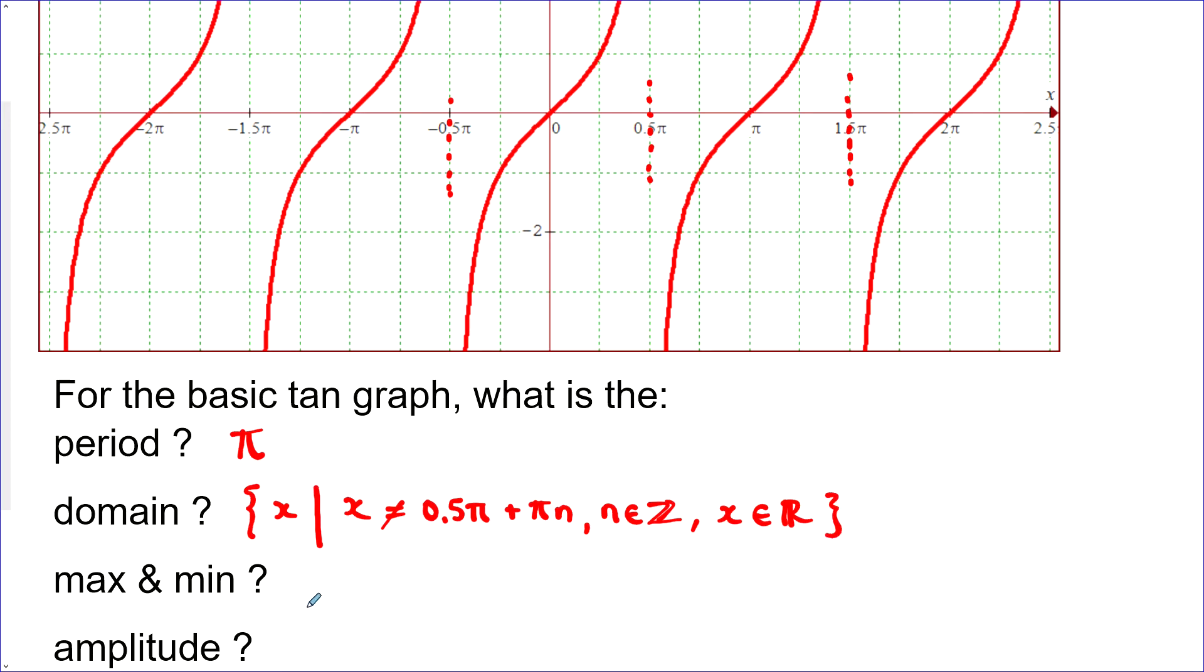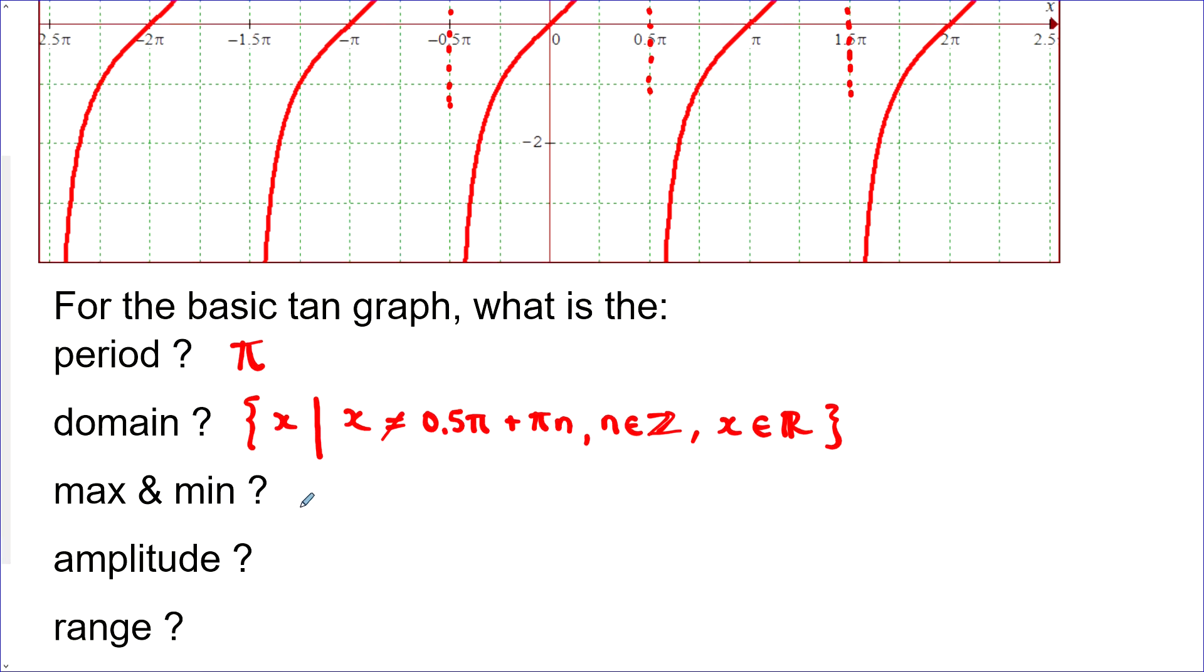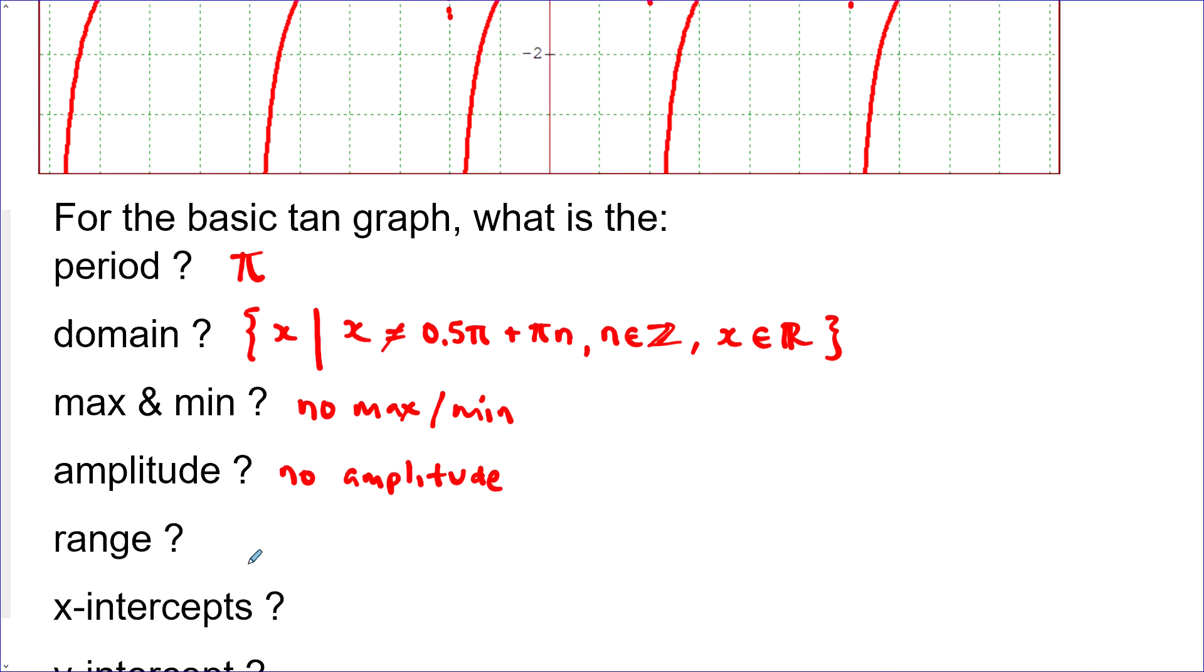Max and min. Well, unlike sine and cos, tan does not have these. What about amplitude? Same deal. Unlike sine and cos, tan does not have an amplitude. What about a range? Let's write this in set builder notation as well. y is such that y is any real number.